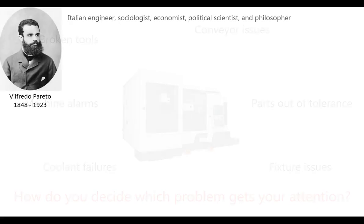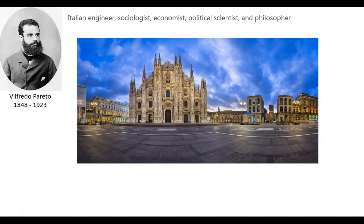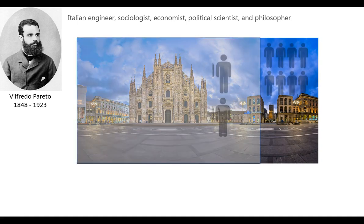A little backstory: this is a sociologist, engineer, economist, political scientist, and philosopher named Vilfredo Pareto. He was born in the mid-1800s and died in the relatively early 1900s — not even a full hundred years ago. He came up with an observation that really does change a lot of problem-solving and causes people to look at issues in a totally different way. As an Italian economist, he was working on a project and noticed that in Milan, 80% of the wealth was actually controlled by 20% of the population.